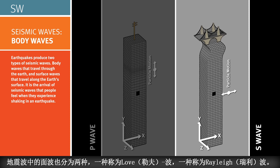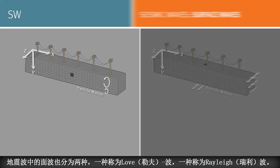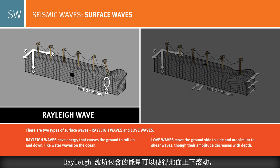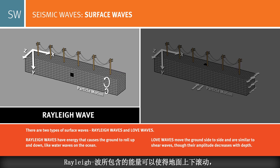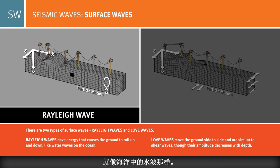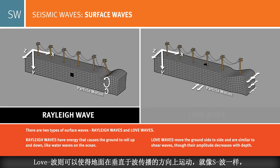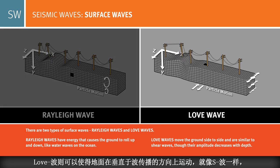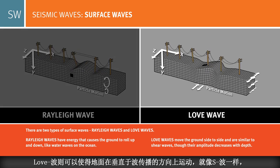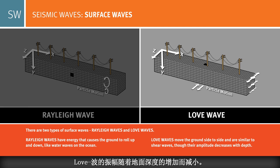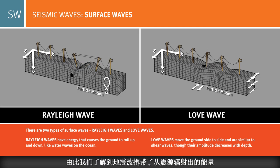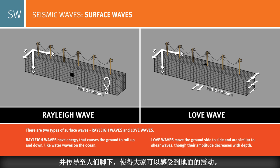There are likewise two kinds of surface waves. Rayleigh waves have energy that causes the ground to roll up and down, like water waves on the ocean. Love waves move the ground from side to side, and are similar to shear waves, but can have larger amplitudes. Seismic waves carry the energy from the earthquake source to the surface, where people can feel the shaking.